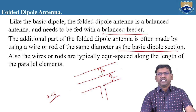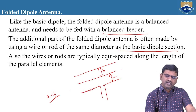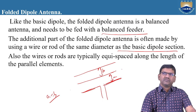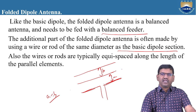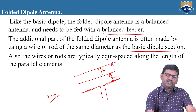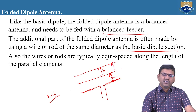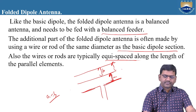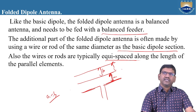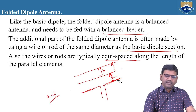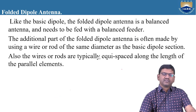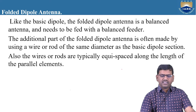You can place any number of elements in parallel to this half-wave dipole antenna. Whenever we place all these elements in parallel, the spacing between the elements must be equal — equispaced. These are the basic characteristics of the folded dipole antenna that you must observe before starting the design.